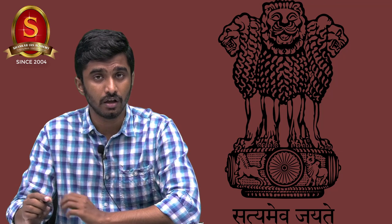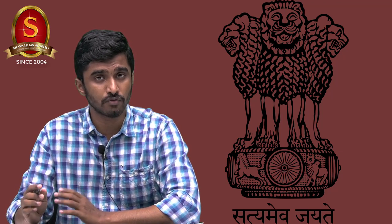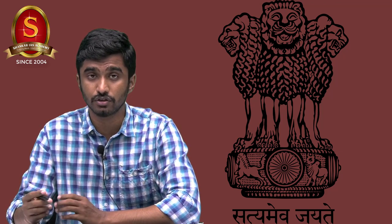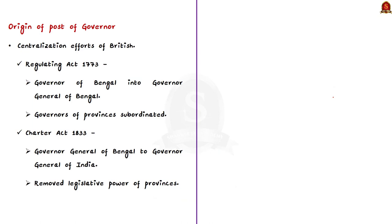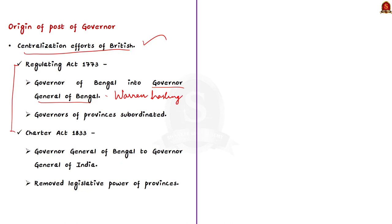To know the answer for this question and to know more about the evolution of the office of governor from the period of British India to the present day, watch this video fully. Between the Regulating Act 1773 and Charter Act 1833, the colonial government was centralizing the administration of British India. The Regulating Act 1773 transformed the office of Governor of Bengal into Governor General of Bengal, making Lord Warren Hastings the first Governor General of Bengal. This act also made the governors of the presidencies like Bombay and Madras subordinate to the Governor General of Bengal.